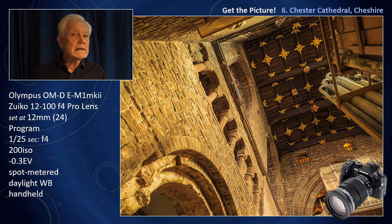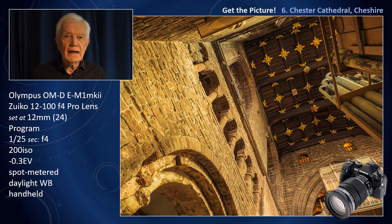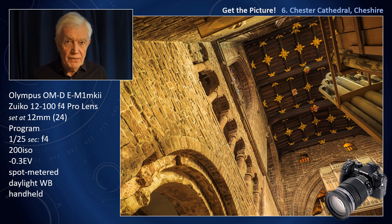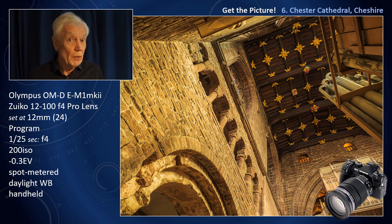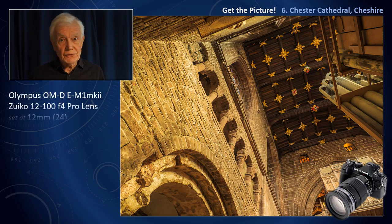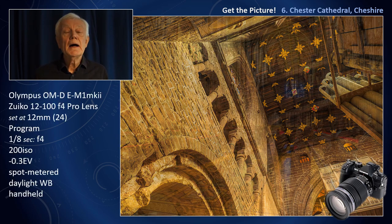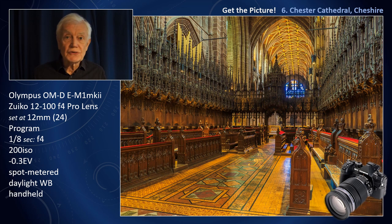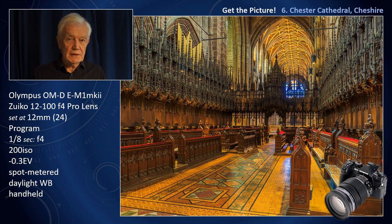Regarding white balance, that can be a problem because of all the different lighting sources — it's very difficult at the time to get the right colour balance. So what I normally do is put it on auto. Yes, I cheat if you like, but then of course I'm saving to RAW, so I can make adjustments afterwards in post-production.